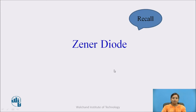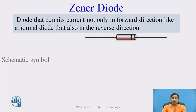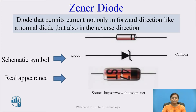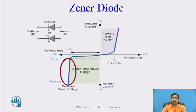Before moving ahead, quickly recall some basic things regarding the Zener diode. The Zener diode is a special purpose device which is a heavily doped PN junction diode and it permits current in the forward direction as well as the reverse direction. This is the symbol for the Zener diode and this is the real appearance of the Zener diode. In forward biasing mode, the Zener diode works like a normal PN junction diode. But in reverse biasing mode, as the voltage across the Zener becomes equal to breakdown voltage, the voltage remains constant. That voltage is called the Zener voltage and current increases sharply. This region is the Zener breakdown region.